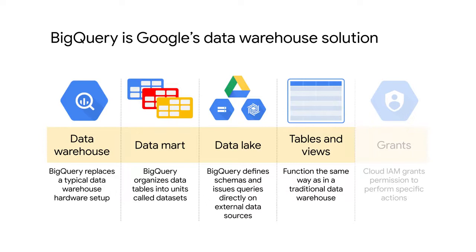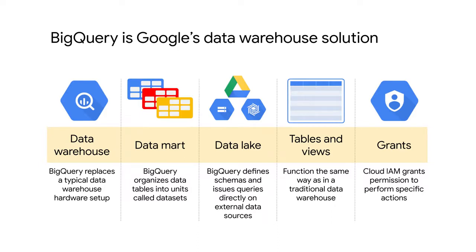Database tables and views function the same way in BigQuery as they do in a traditional data warehouse, allowing BigQuery to support queries written in a standard SQL dialect that is ANSI 2011 compliant. Cloud Identity and Access Management, or Cloud IAM, is used to grant permission to perform specific actions in BigQuery. This replaces the SQL grant and revoke statements used to manage access permissions in traditional SQL databases.